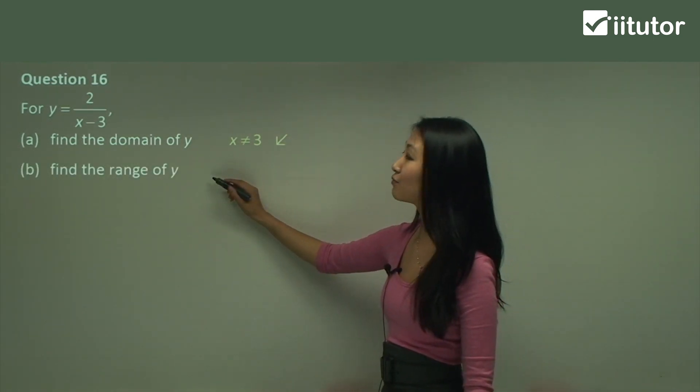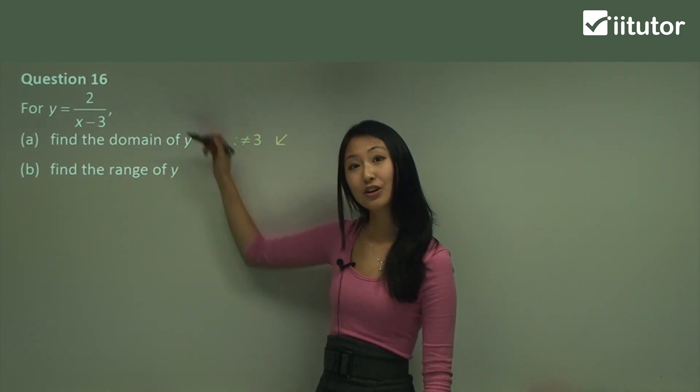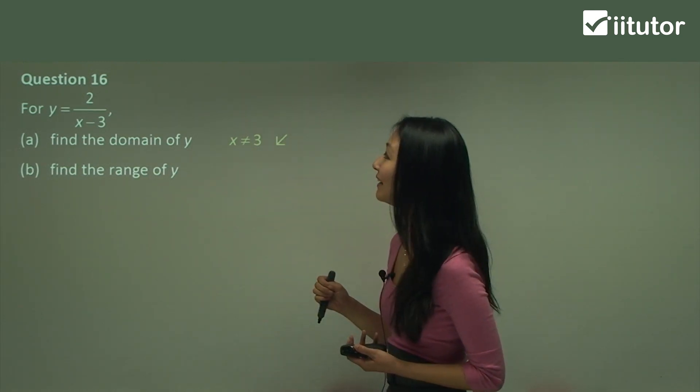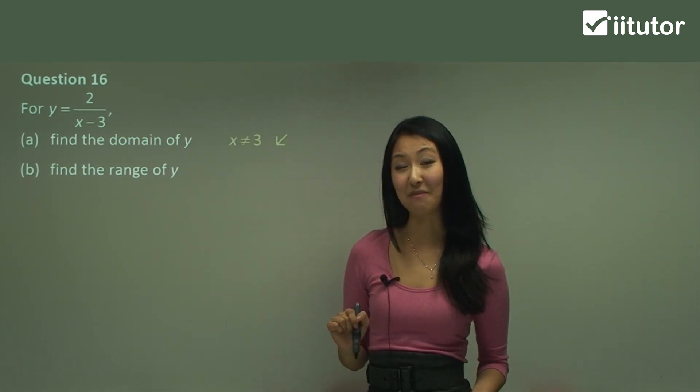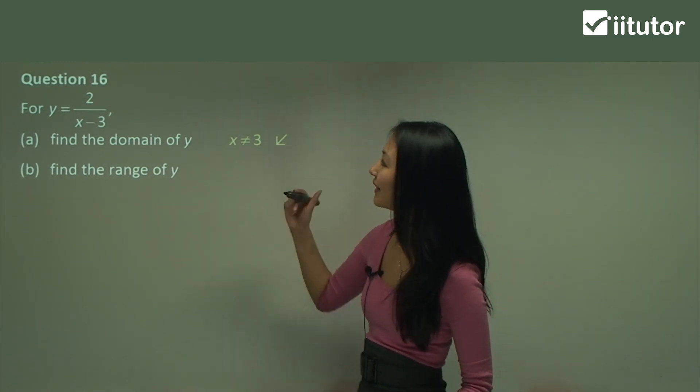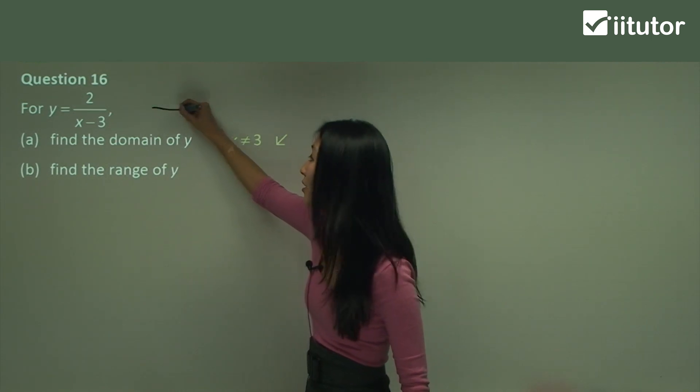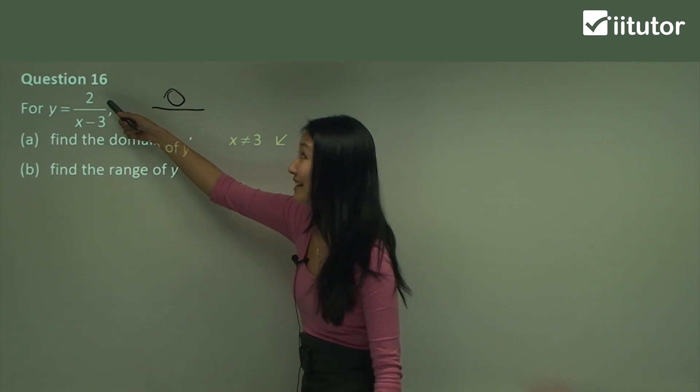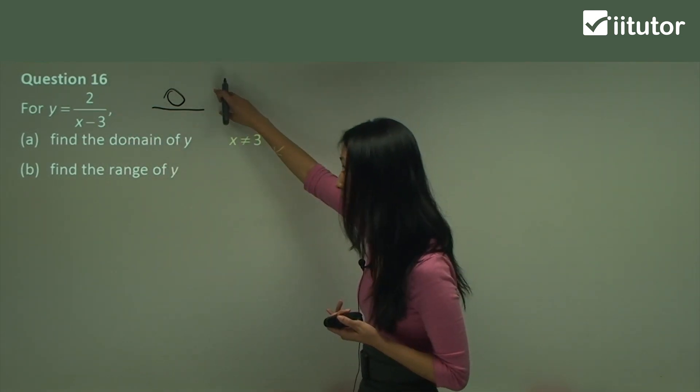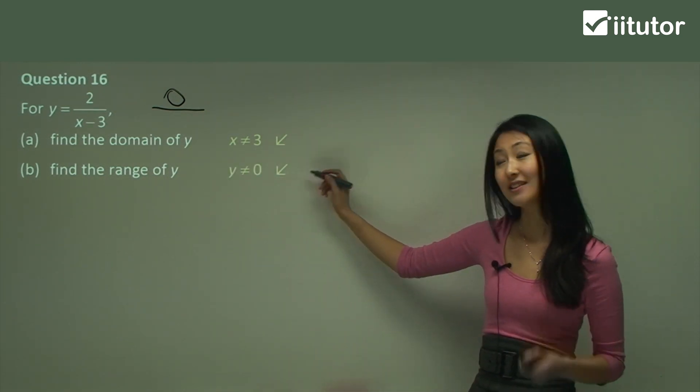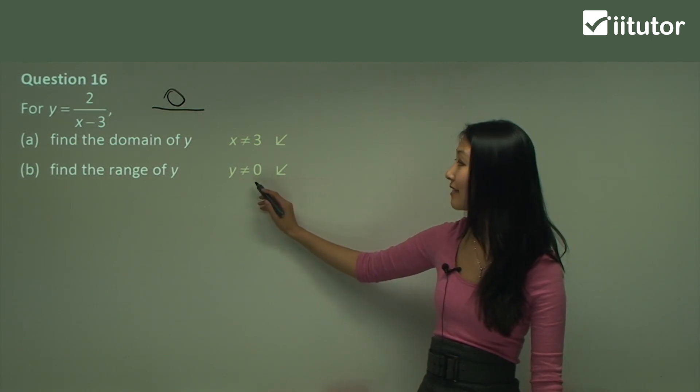Now, what about the range of this function? So the range was every number that y could equal to. Now, y can equal any number except for one particular number. Now, can you tell me what that might be? Well, can you see that for y to equal 0, we would need the numerator to be 0. Now, because the numerator is specified as 2, there's no way we can change that to 0. So therefore, y can never equal 0. So our range would be y can be everything except 0.